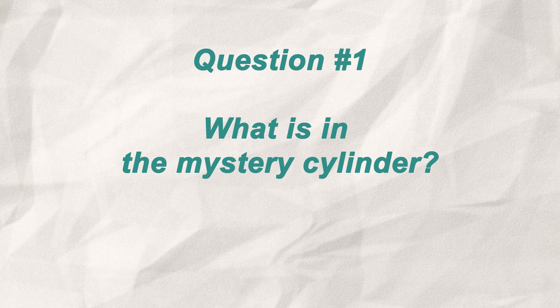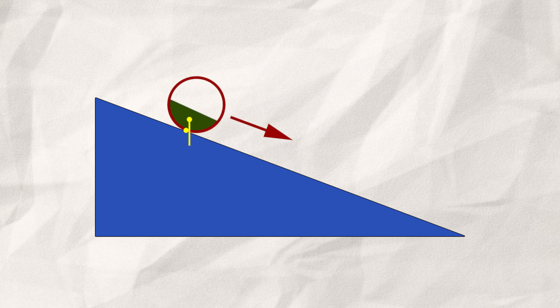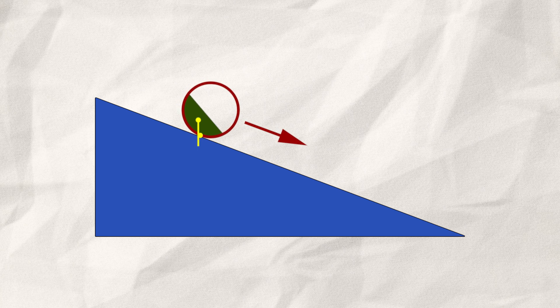Question 1. What is in the mystery cylinder? On an inclined plane, the cylinder should always roll down. I think inside the cylinder is a viscous fluid. Let's draw in the contact point and the center of mass of the fluid. Currently, the center is in front of the contact point. But as soon as the cylinder starts rolling, the fluid can't keep up and the center of mass moves behind the contact point, stopping the cylinder.